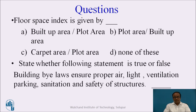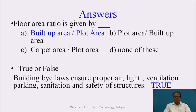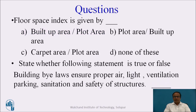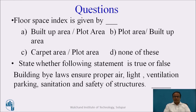You are supposed to pause the video and answer these questions. As we know, the Floor Space Index is governed by the ratio of built-up area to plot area, so option A is the correct answer. In the second question, building bylaws ensure proper air, light, ventilation, parking, sanitation, and safety of structures — this statement is true, because for living purposes we should ensure ample light, good ventilation, parking space, good sanitation, safety of structures, and good quality of air.